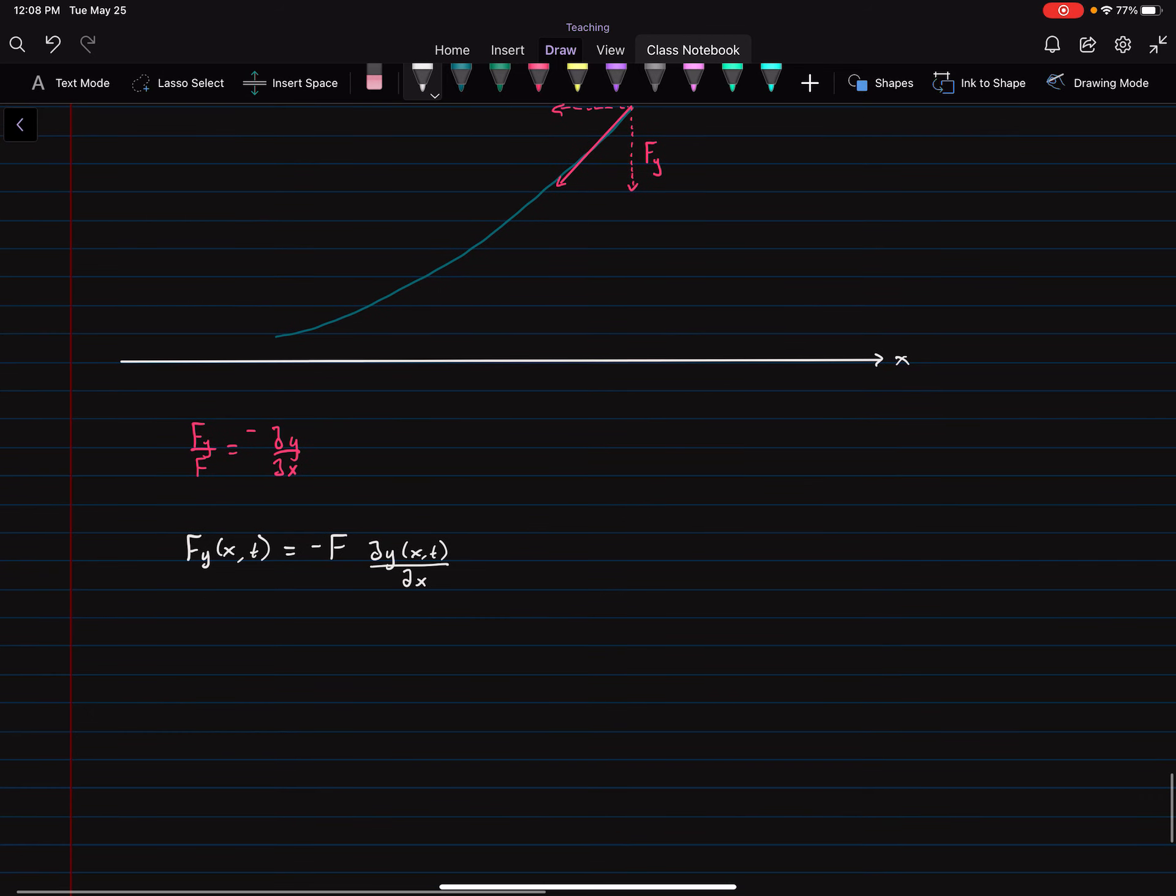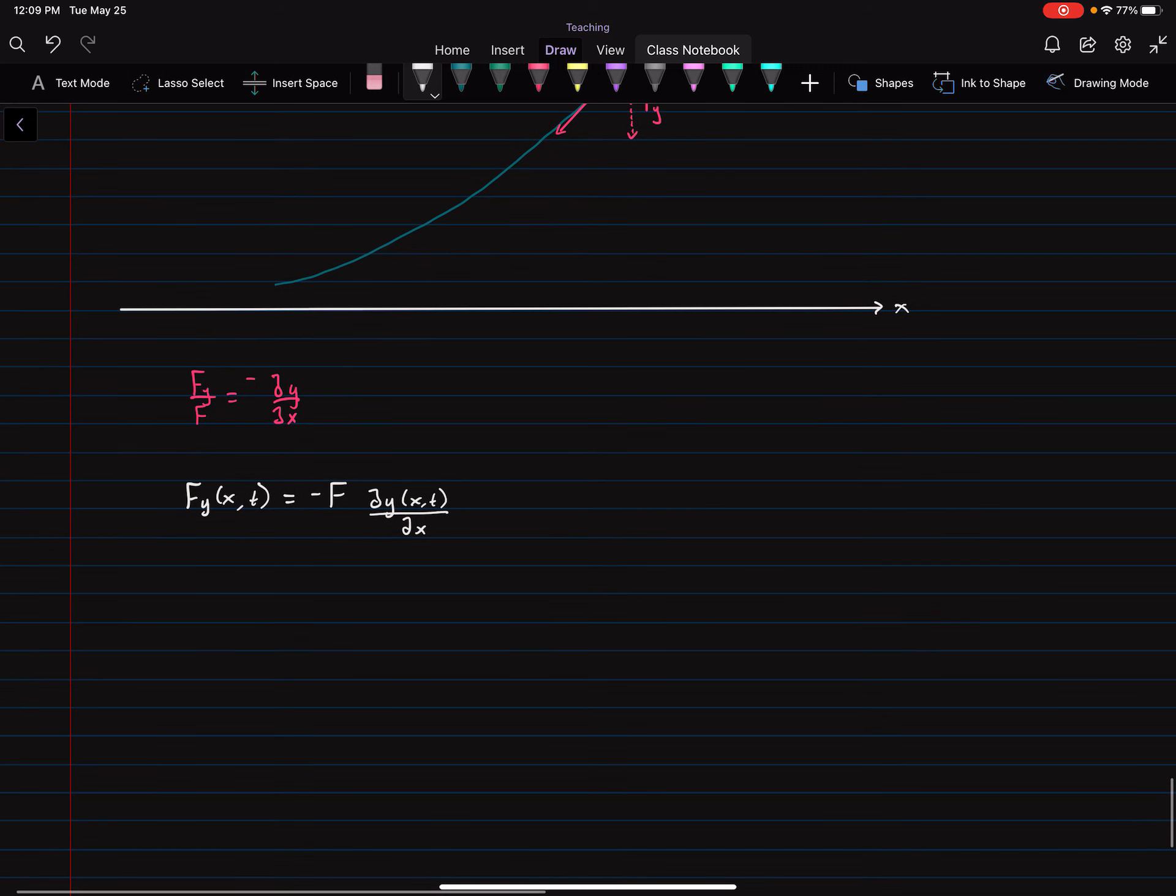And so it's only the Y component of the force. And this Y component of the force depends both on the position and the time that we're talking about. And so that's why we wrote this out explicitly, whereas this F here, it doesn't really depend on anything. It's just going to cancel out. There's no net F.